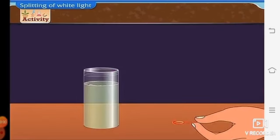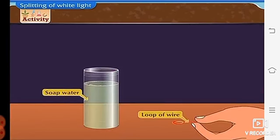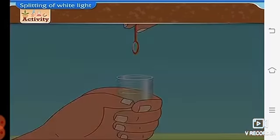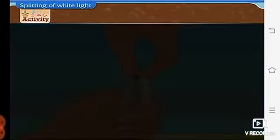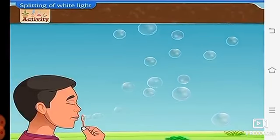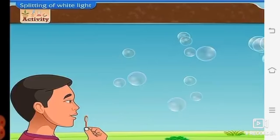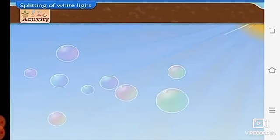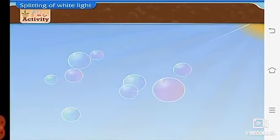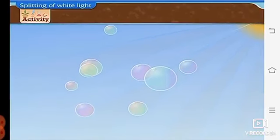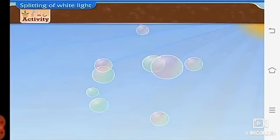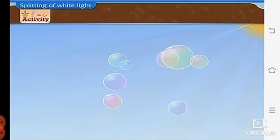Let us do another activity. For this activity, we require soap water and a loop of wire. Dip the wire loop in the soap water and then blow on it. Soap bubbles are formed. Do you see the beautiful colors of the rainbow in these bubbles? Yes, we are able to see different colors of the rainbows in these bubbles.